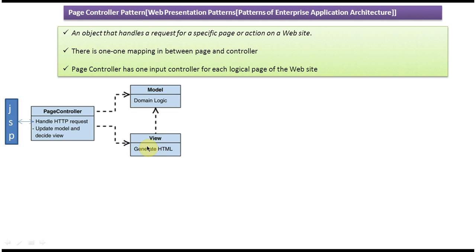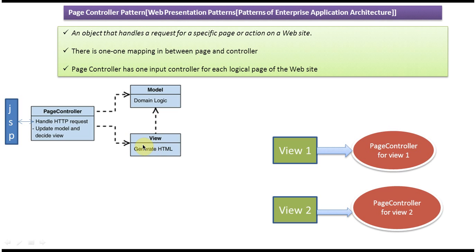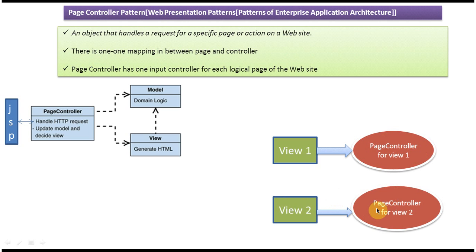As per this design pattern, for each view one controller will be there. If view V1 is there, then one controller handles V1; if view V2 is there, then one controller handles V2. So one controller handles all V1-related actions and another handles all V2-related actions.